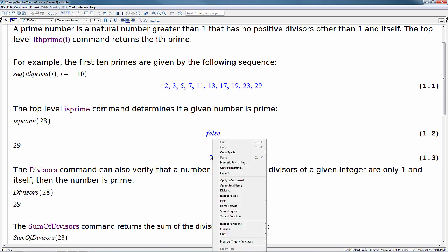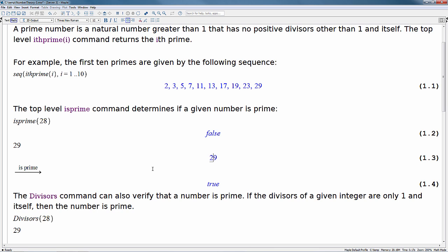We can right-click on 29, go down to queries and choose is prime number. And this tells us true that 29 is in fact a prime number.